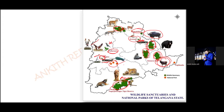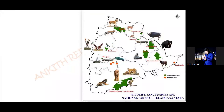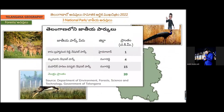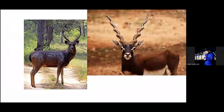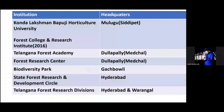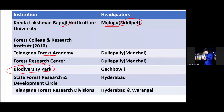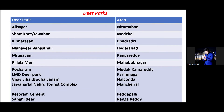We have three national parks: one is Mahavir Harina Vanasthali National Park, KBR Park. Regarding institutions and headquarters: Kondal Laxman Bapuji Articles University is in Mulugu, which is in Siddipet district. Forest College and Research Institute is also there. Telangana Forest Academy is in Dulapally. Research center is also in Dulapally. Biodiversity Park is in Gachibowli, and State Forest Research and Development Circle is in Hyderabad.